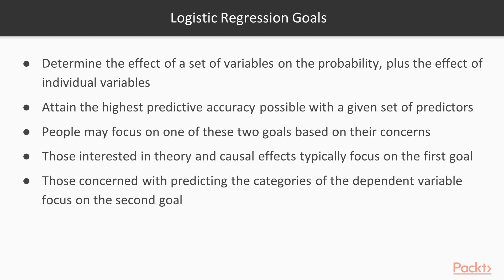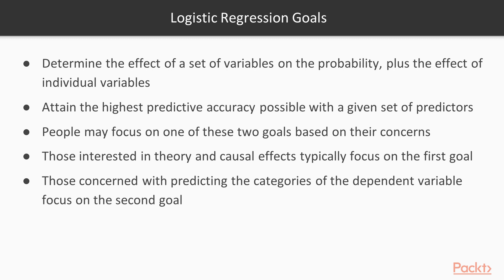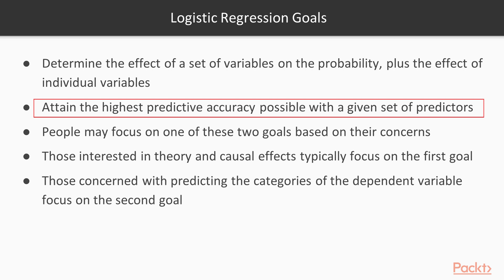In terms of the goals of logistic regression, the first is that you want to determine the effect of a set of variables on the probability, plus the effect of the individual variables. First of all, we want to make sure we have an overall statistically significant model, and then once we have that, we want to see which predictors are the important ones. The second goal is that we want to attain the highest predictive accuracy possible given the set of predictors that we have.